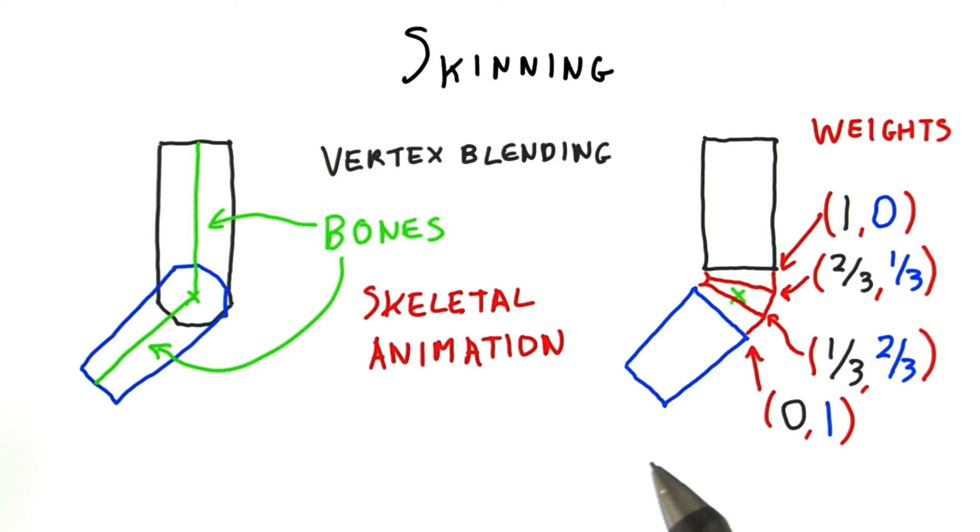As a bone moves, the skin is influenced by the bone's transform times its weight. Specifically, let's look at this one vertex on the skin near the forearm. The vertex location is transformed twice, once with respect to the forearm and once with respect to the upper arm. These two transformed locations are then multiplied by their corresponding weights, giving the interpolated point between them.